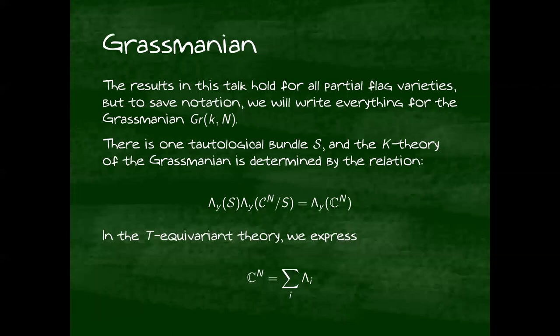So here, S_{n+1} is C^n, and this equivariantly is the sum of the equivariant parameters. So this presentation also works equivariantly. Okay. So again, we're going to focus on the Grassmannian because it means I can write more understandable equations. So the Grassmannian, there's only one tautological bundle and one quotient. And this one equation here determines all of the relations in the K-theory of the Grassmannian if you take each power of y separately.